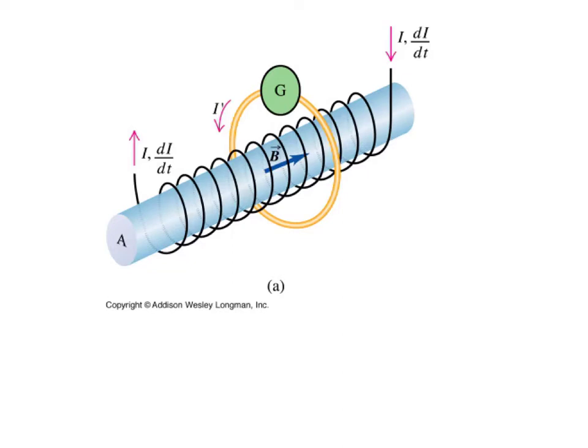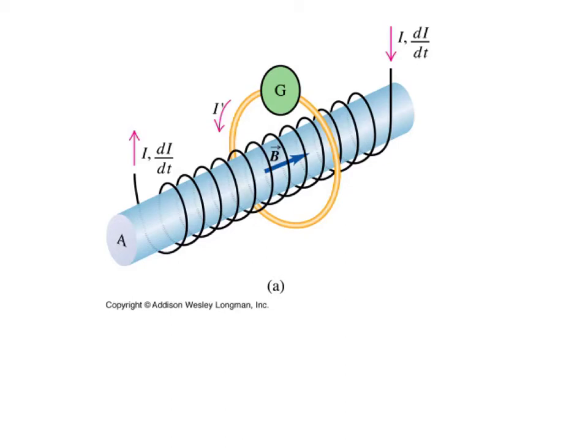So now let's look at what happens if we take away that ring of wire. Something very curious. So here's the solenoid again, but notice that the copper wire ring around it is missing.